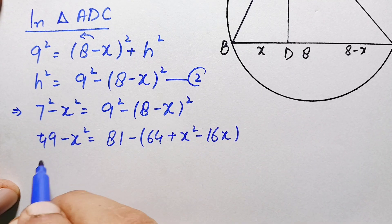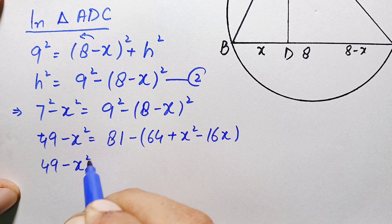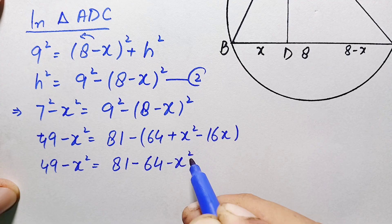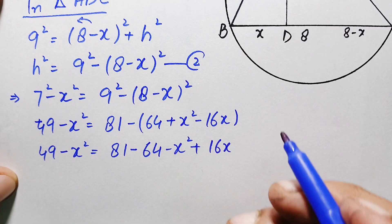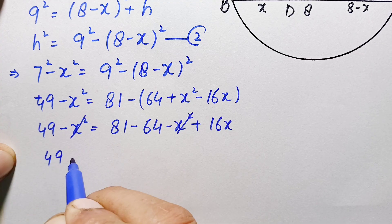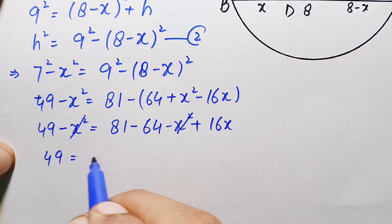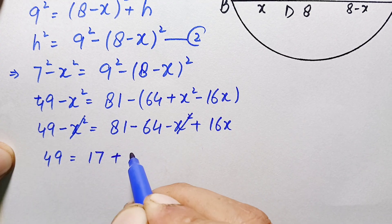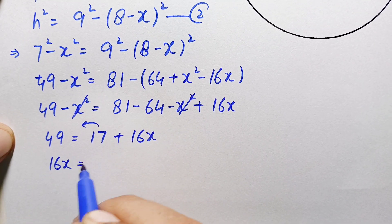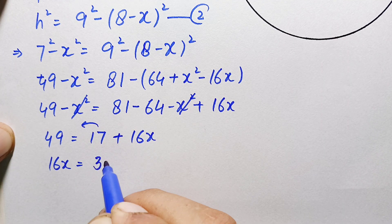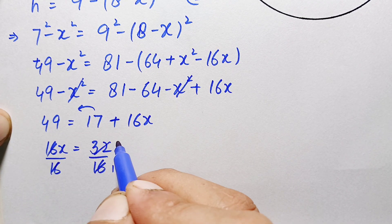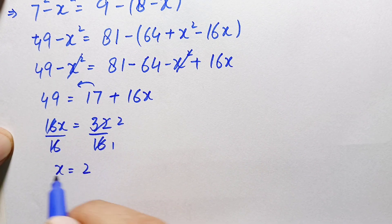Multiplying the negative sign inside the parenthesis, we get: 49 − x² = 17 + 16x − x². The x² terms cancel from both sides, leaving 49 = 17 + 16x. Moving 17 to the left hand side: 16x = 49 − 17 = 32. Dividing both sides by 16, we get x = 2.